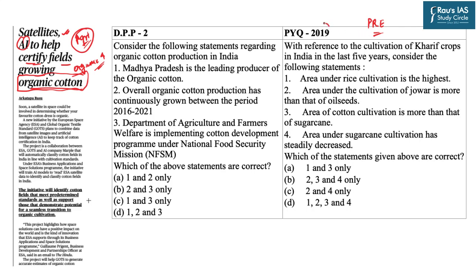A reference question from 2019 asks about cultivation of kharif crops in India over the last five years — this signals you should be aware of trends related to important crops. In similar fashion we have designed today's second DPP. Consider the following statements regarding organic cotton production in India. Statement one says Madhya Pradesh is the leading producer of organic cotton — this statement is factually correct. Detailed data will be found in the word file.